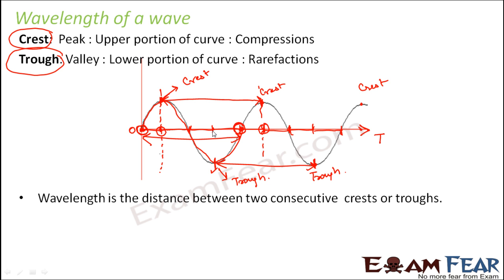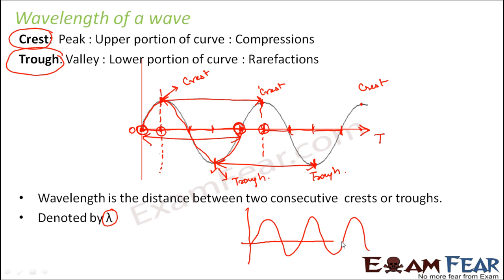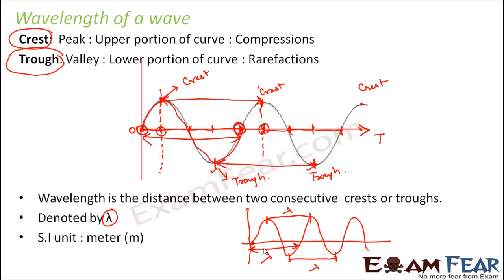We normally denote wavelength by lambda. So one wavelength could be this distance, and they are all the same distance — they are all lambda. It is measured in meters because it is nothing but length, so we are actually talking about length.